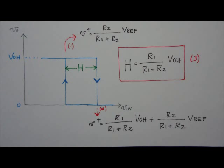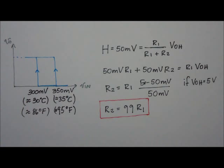Now, if we establish the lower limit as 300 mV, which is equivalent to 30 degrees Celsius, and the upper limit as 350 mV, which is equivalent to 35 degrees Celsius, H is equal to 50 mV.